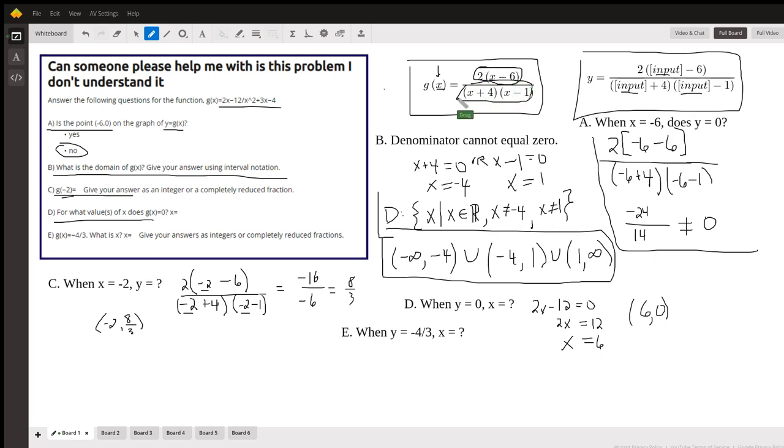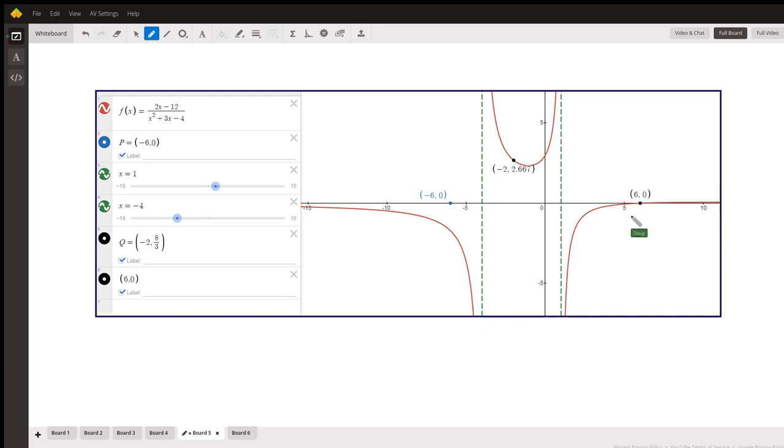0 divided by whatever we have down here will give us 0. To solve 2x minus 12 equals 0, x equals 6. So the point 6 comma 0 is a root of this function. And there it is right there, 6 comma 0 is on the graph.